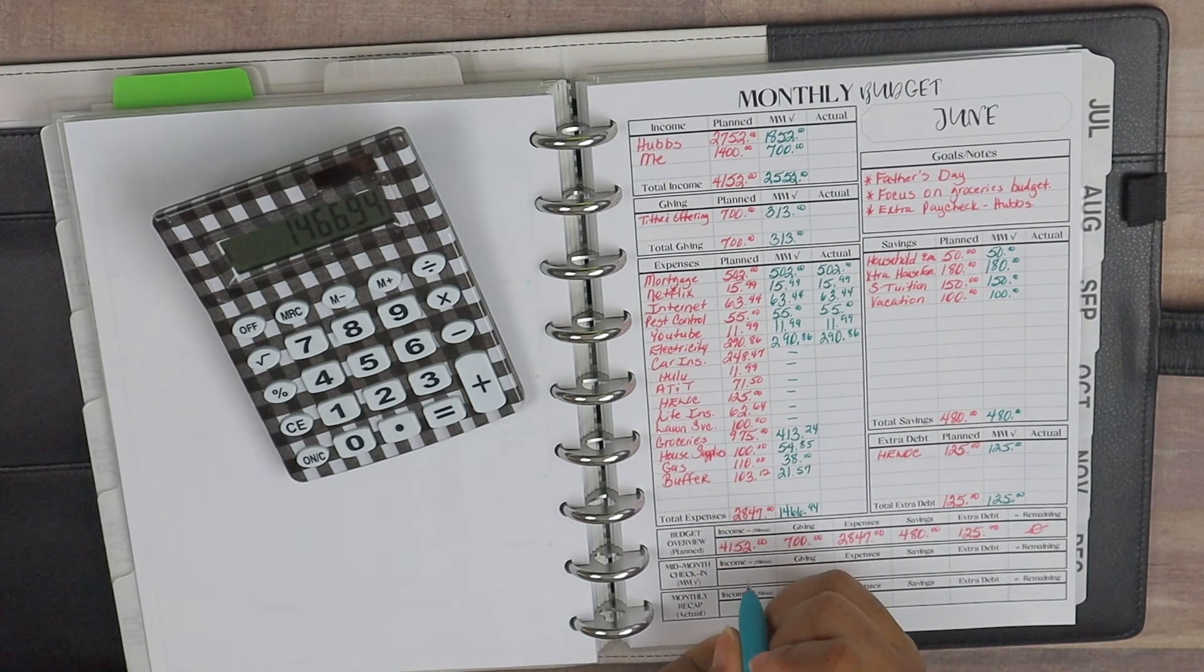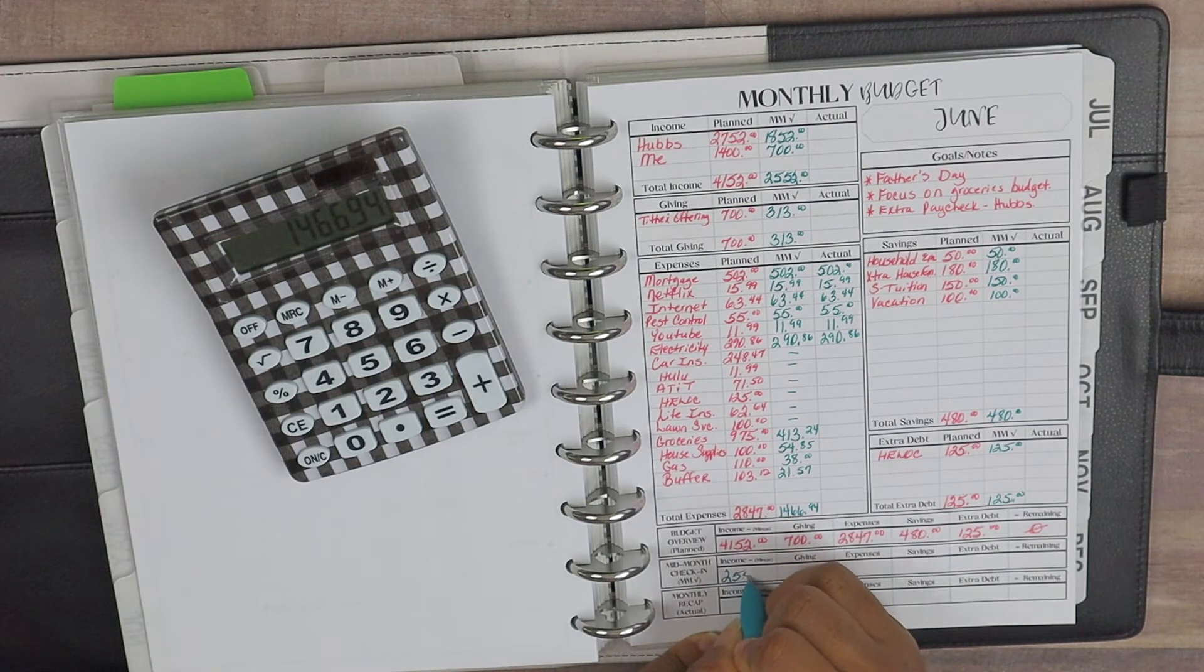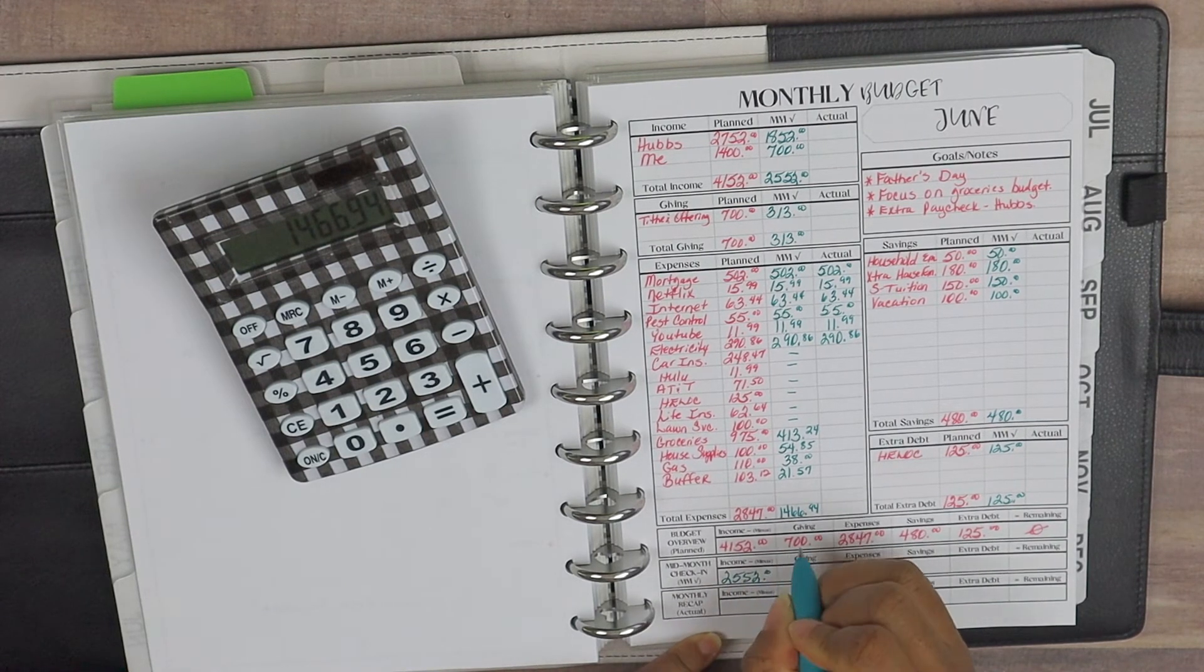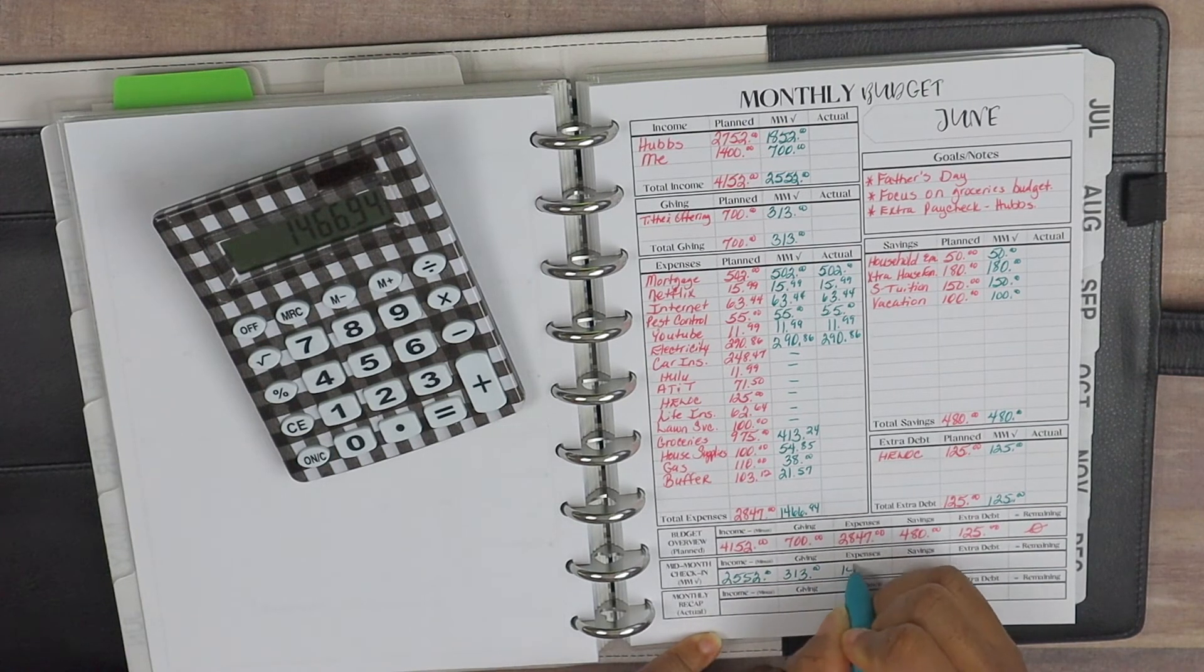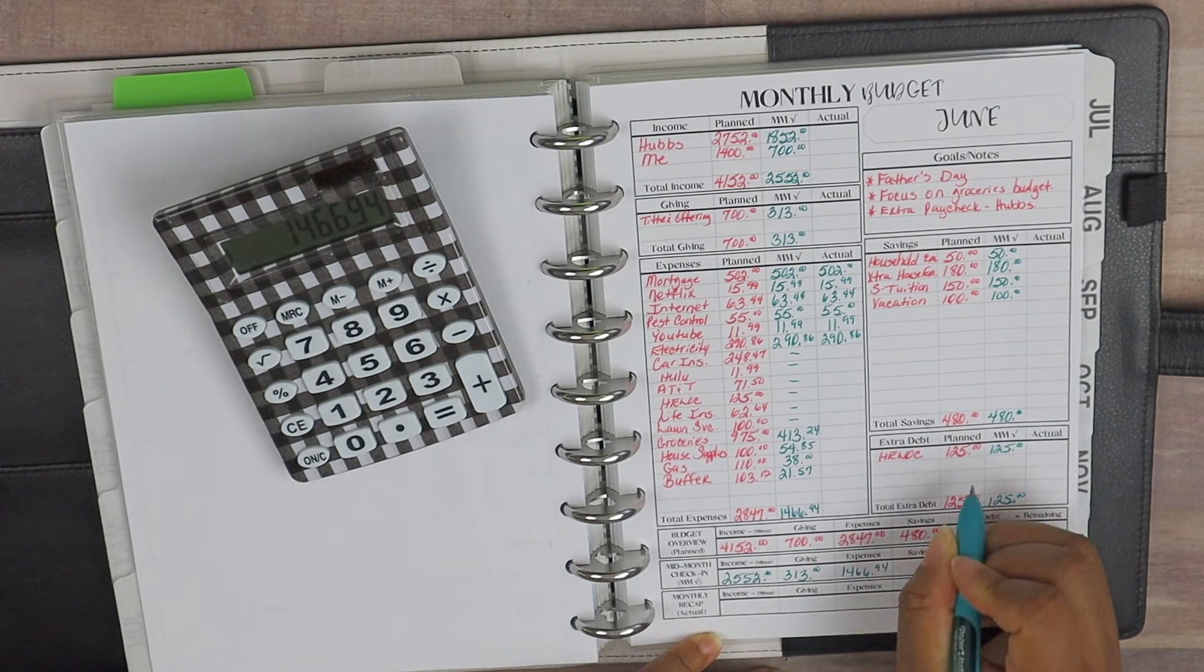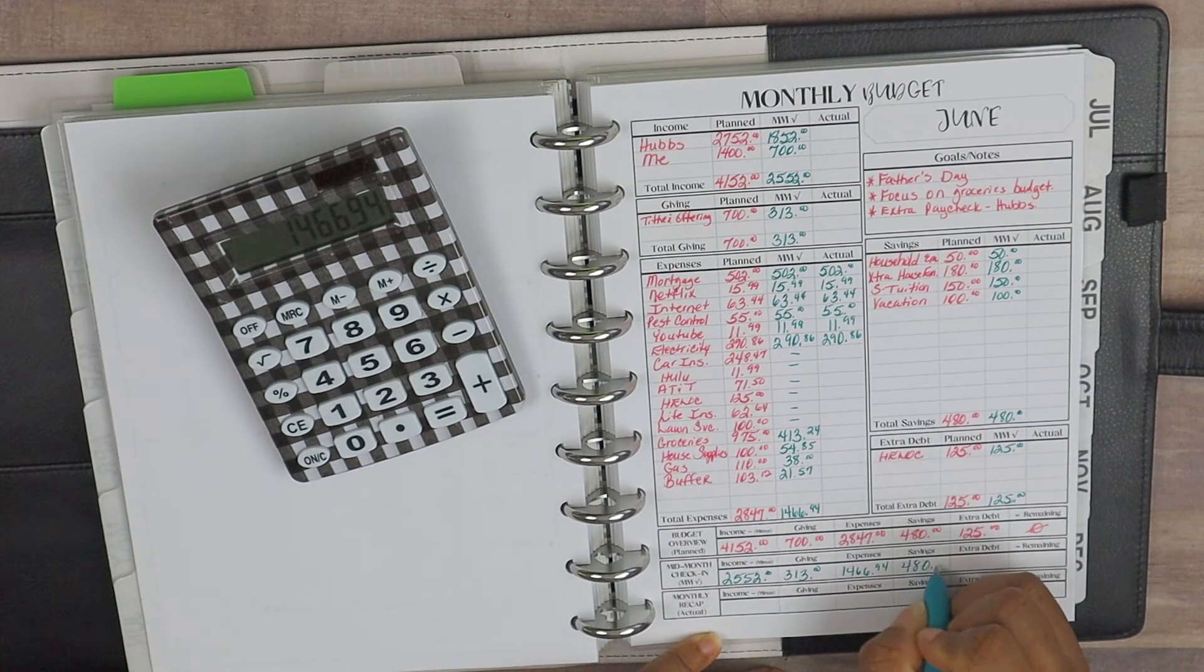So our income thus far is at $2,552, and our giving is at $313. Our expenses, $1,466.94. Our savings, $480, and the extra debt, $125 thus far. So we can go ahead and crunch these numbers.